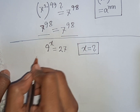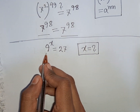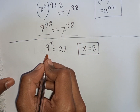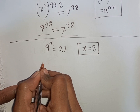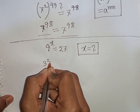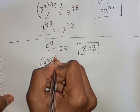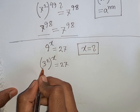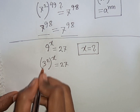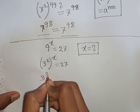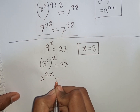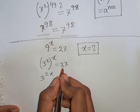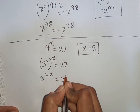Next, a bonus algebra problem: 9^x = 27, find the value of x. We rewrite 9^x as (3^2)^x, which by the exponent rule equals 3^(2x). And 27 can be written as 3^3.